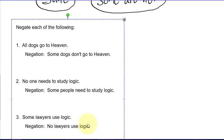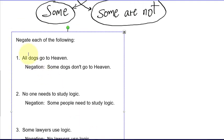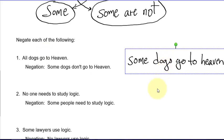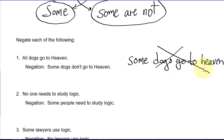Let me point out some common mistakes. For 'all dogs go to heaven,' sometimes people write 'some dogs go to heaven' as the negation — but that isn't right. If 'all dogs go to heaven' were true, then technically 'some dogs go to heaven' would also be true. Both statements could logically be true simultaneously, so they don't form a negation of each other. 'Some dogs go to heaven' is not a correct negation for 'all dogs go to heaven.'